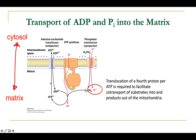This is accomplished by the action of two transmembrane transport channels. One is the phosphate translocase, whose job is to translocate one of the substrates for ATP synthase — inorganic phosphate — from the cytosol into the matrix. The other is the adenine nucleotide translocase, which is classified as an antiporter.